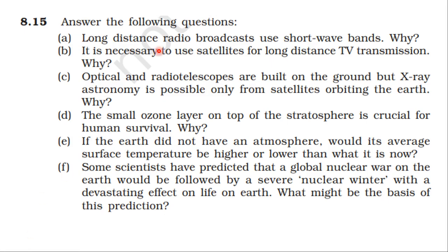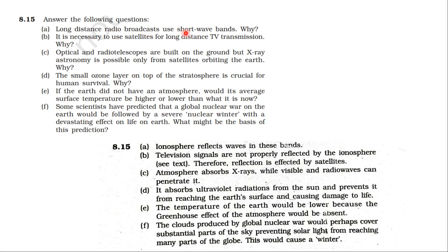Short answer questions: Long distance radio broadcasts use short waves because the ionosphere reflects waves in these bands. Satellites are necessary for long-distance TV transmission because television signals are not properly reflected by the ionosphere, so reflection is done by satellites. X-ray astronomy is only possible from satellites orbiting the earth because the atmosphere absorbs X-rays, while visible and radio waves can penetrate it.